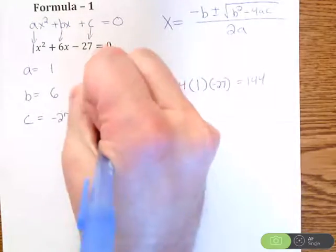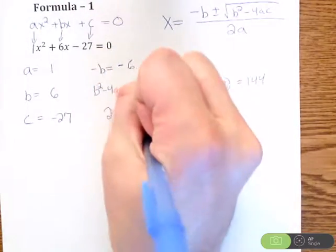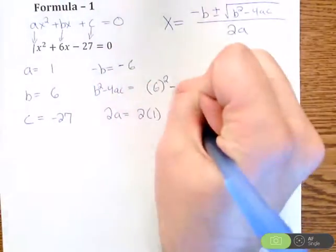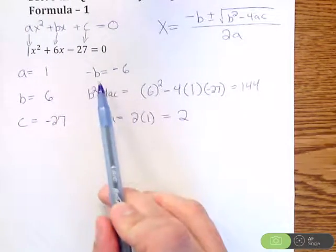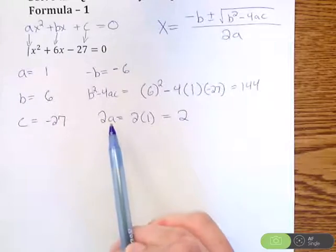Finally, the final piece that I'm going to find out off to the side is 2a. So that's 2 times 1, which is 2. So I have all my pieces here. I know what negative b is. I know what b squared minus 4ac is. I know what 2a is.